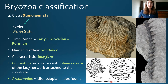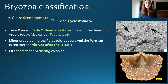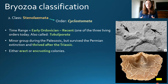Now moving to Cyclostomata — this order went from the early Ordovician to recent. It is the only order of the class Stenolaemata that is not extinct and is one of the three common orders of bryozoa found on Earth today. Also called Tubuloporata, it was a minor group in the Paleozoic, but unlike the other Stenolaemata orders it survived the Permian extinction and thrived after the Triassic. This order can be either erect or encrusting.